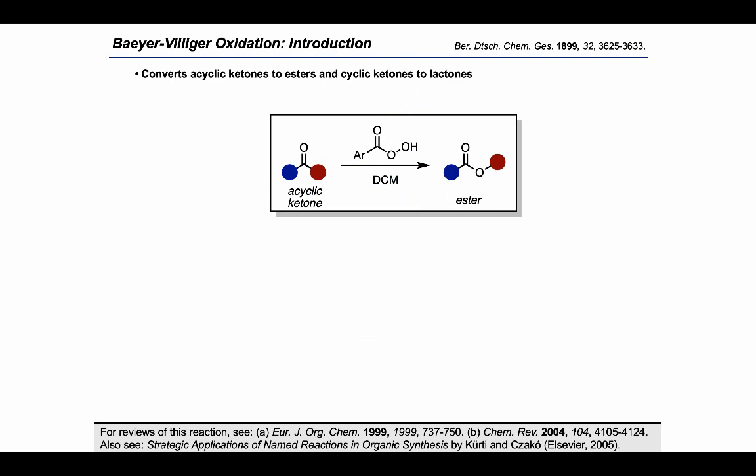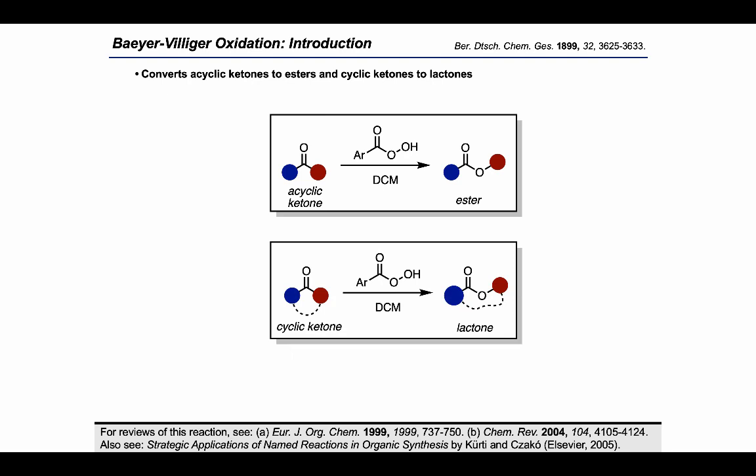In a general sense, the Bayer-Villiger oxidation is the conversion of an acyclic ketone to an ester, or a cyclic ketone to a lactone. You can already tell from this slide that depending on whether you have a symmetrical or non-symmetrical ketone starting material, you may or may not have a selectivity problem — you could have ester formation on either side of the ketone.